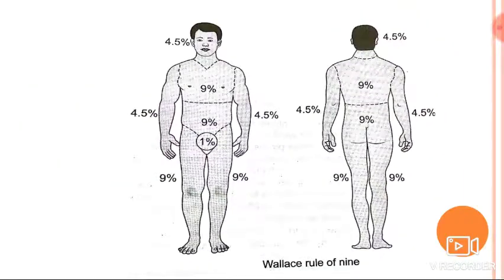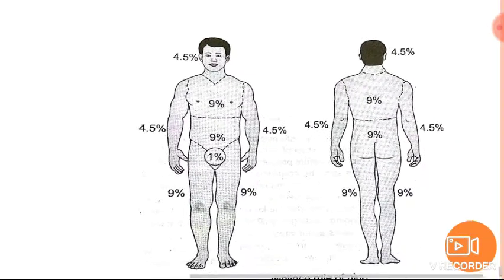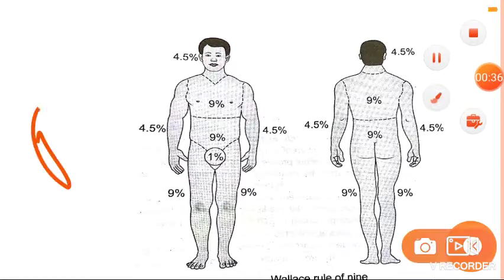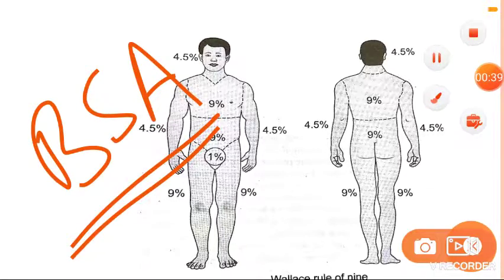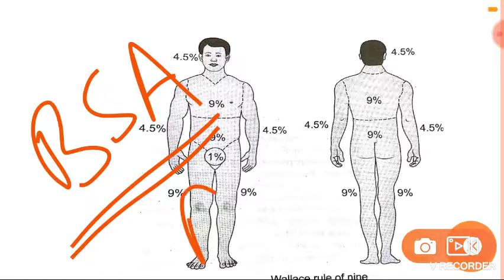Wallace's Rule of Nine is employed for the estimation of body surface area involved in burns in adults. BSA stands for body surface area — you're going to estimate the body surface area which is involved in the burns in adults.